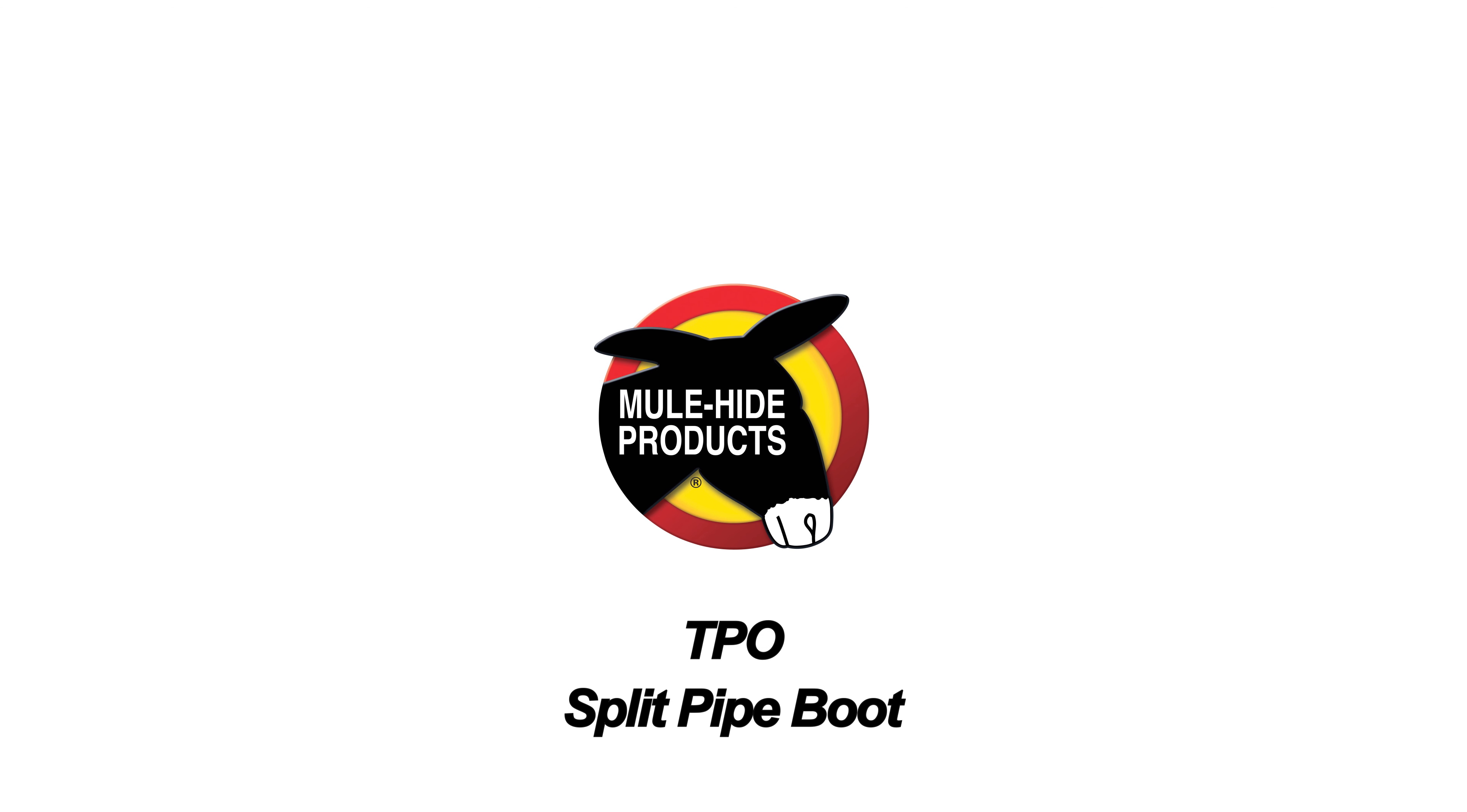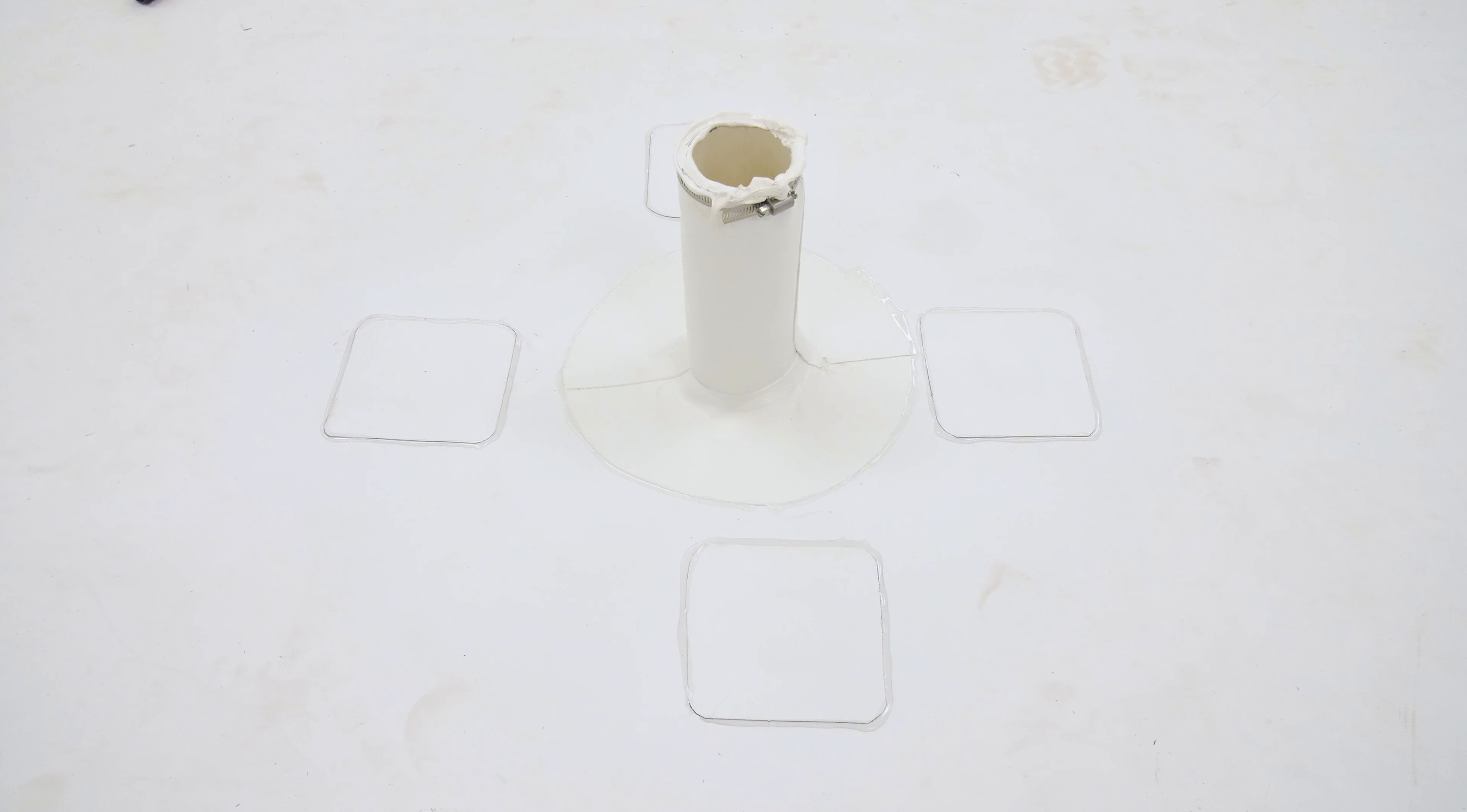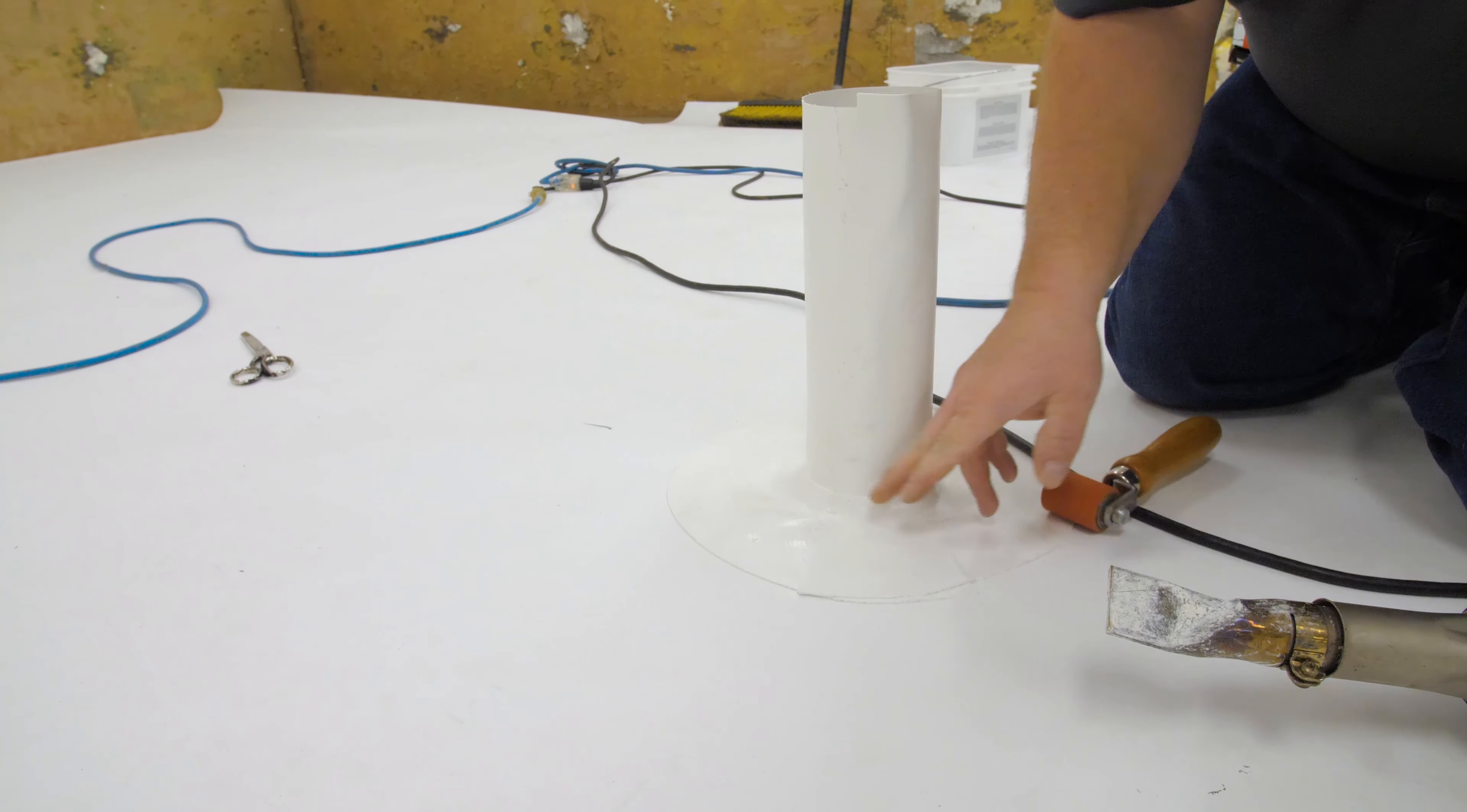TPO split pipe boots are prefabricated round projection flashings made from specially designed 60 mil reinforced TPO flashing membrane that eliminates the need for T-joint patches.